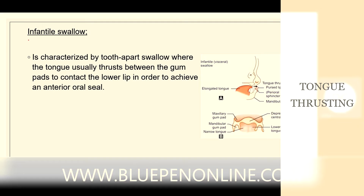When is this infantile swallow present? It is present in infants before the eruption of the teeth. That kind of swallowing is said to be infantile swallowing, which will later transition to mature swallowing. Here in the picture you can see the tongue thrusting between the upper and lower gum pads.